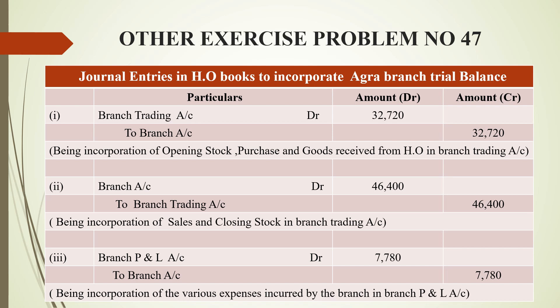The third entry is for branch profit and loss account expenses. Branch profit and loss account is debited for indirect expenses — since direct expenses go to the trading account, indirect expenses go to the profit and loss account. Cash is going out, so branch account is credited. The amount is 7,780 rupees.